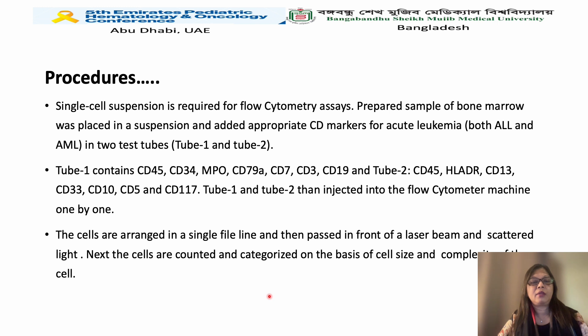When cells pass in front of the laser beam, laser light hits the cell and the cell scatters the light in different ways — forward scatter and sideways scatter. Cells are then counted and categorized on the basis of cell size and complexity.